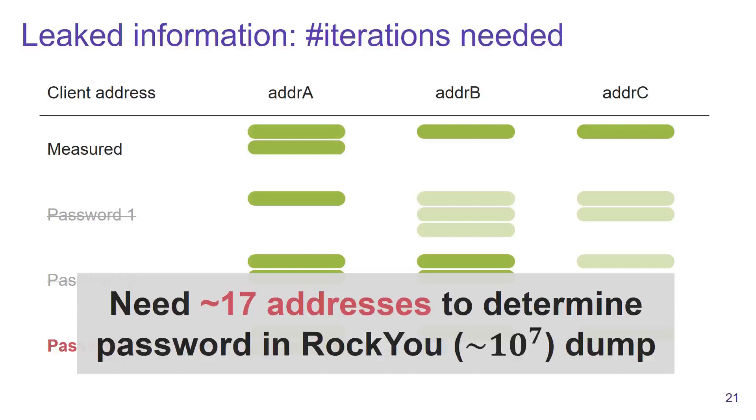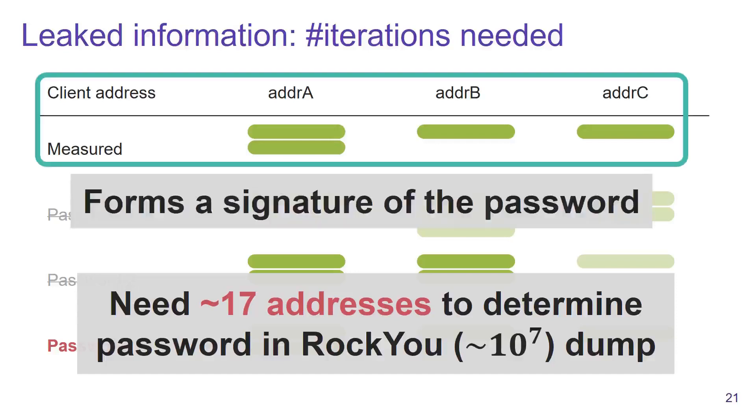Let's say we want to uniquely determine the password in the RockYou database dump. Then on average, we will need to spoof around 17 MAC addresses, which results in a fairly efficient algorithm. One of the main takeaway messages here is that the number of iterations executed for a given set of MAC addresses forms a signature of the password.